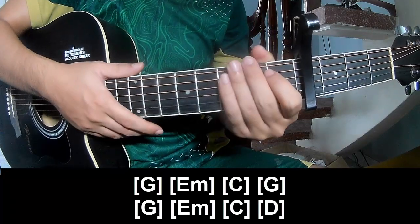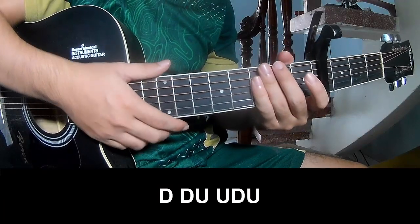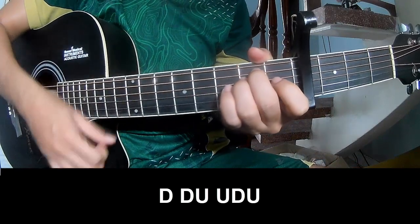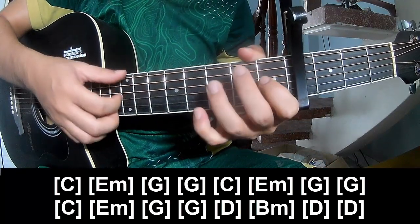The strumming pattern is: down, down, up, up, down, up, down, up, down. Let's play along with C.